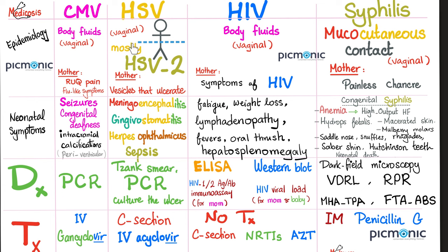HSV or herpes simplex virus — draw the line: above the waist is usually HSV-1, below the waist is HSV-2. We're talking about vertical transmission from mother to neonate, so we're talking about HSV-2 in most cases but not all. Neonatal symptoms include meningoencephalitis, gingivostomatitis, herpes ophthalmicus, and sepsis. Diagnosis: Tzanck smear, PCR, and you can culture the ulcer — herpes love to make vesicles that can ulcerate. Treatment: acyclovir. Prevention: C-section — if the vaginal canal is likely contaminated with herpes, perform a cesarean section.